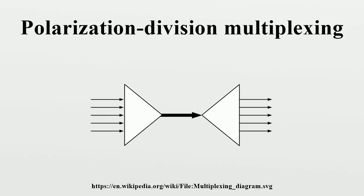Polarization division multiplexing is typically used together with phase modulation or optical QAM, allowing transmission speeds of 100 Gbit/s or more over a single wavelength. Sets of PDM wavelength signals can then be carried over wavelength division multiplexing infrastructure, potentially substantially expanding its capacity.